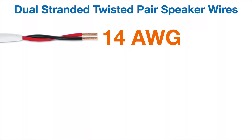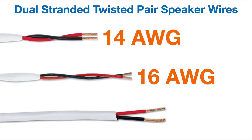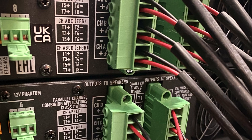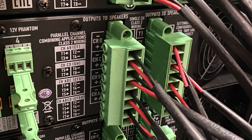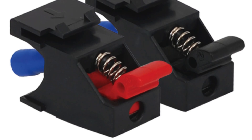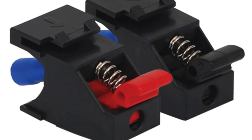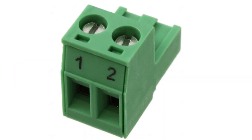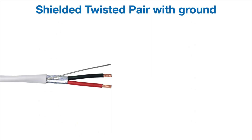Dual stranded twisted pair speaker wires are high performance wires for audio signals and they usually connect to a phoenix, spring clips, or speaker terminal block. The termination is basically stripping the tip off the red and black wire, leaving about 3/8 of an inch exposed on each tip and then twisting them in order to keep the strands together.